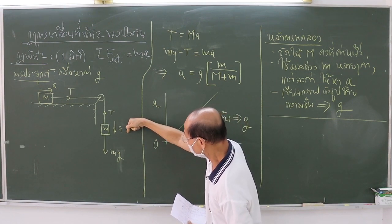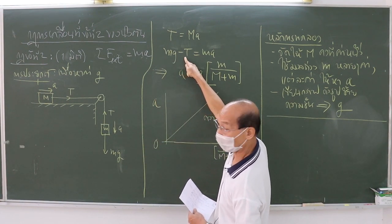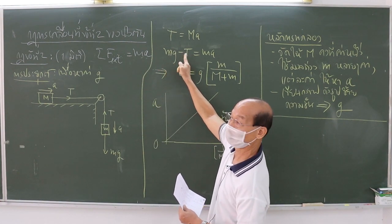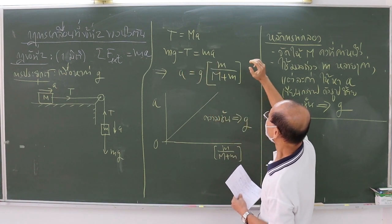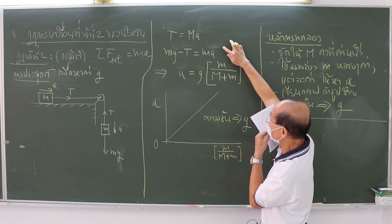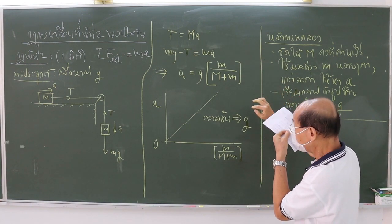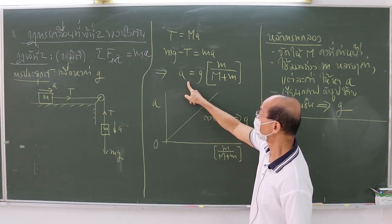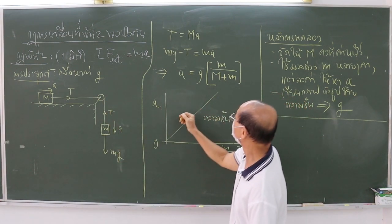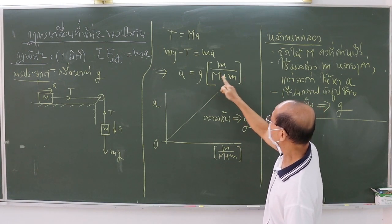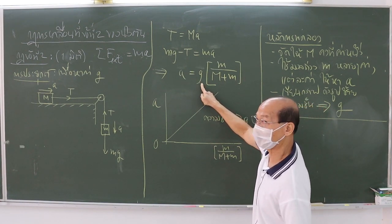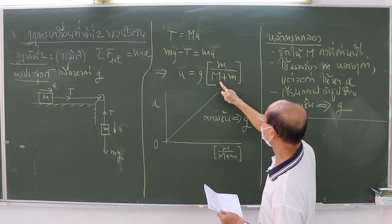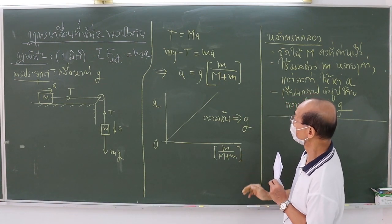On the left-hand side, the forces are the weight and the string tension. The object moves in the downward direction, so we write the net force as mg minus T. From the second and third equations, we can find a relation for the acceleration A of the system. The right-hand side equals the constant G multiplied by the quantity in the brackets, which is the ratio of smaller m divided by capital M plus lower m.